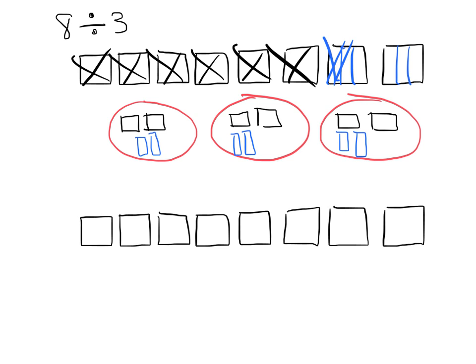These 2 thirds go to the first person, these 2 thirds go to the middle person, and these last 2 thirds go to the third and final person. So we can see that each person gets 2 wholes and 2 thirds — 2 and 2 thirds. So that's the first way.